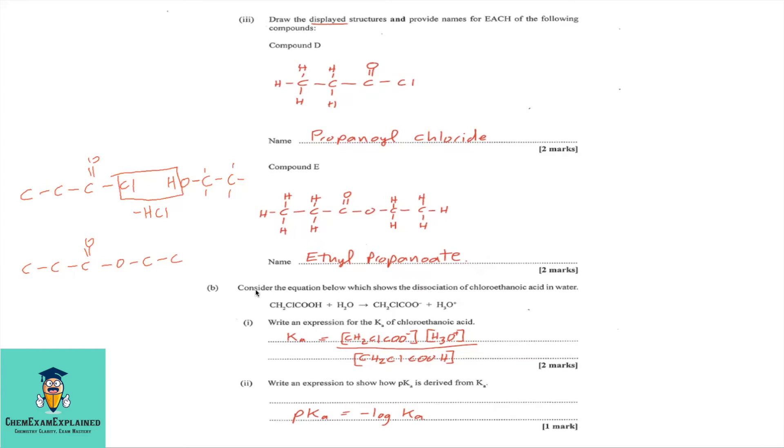Part B. Consider the equation below, which shows the dissociation of chloroethanoic acid in water. Here we have chloroethanoic acid plus water. And it dissociates.